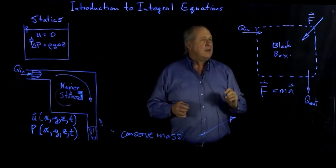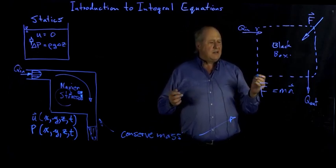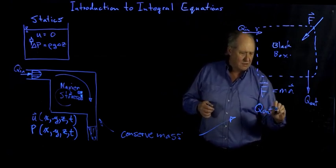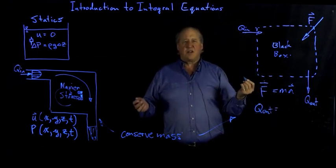The simplest one: Q out has to balance out with what comes in, if certain characteristics apply.